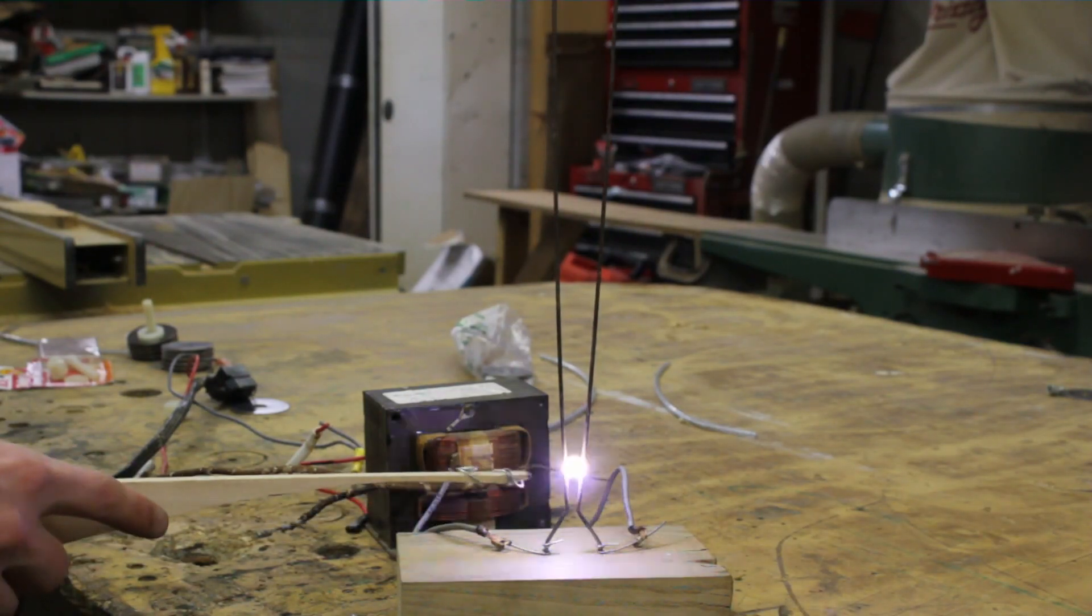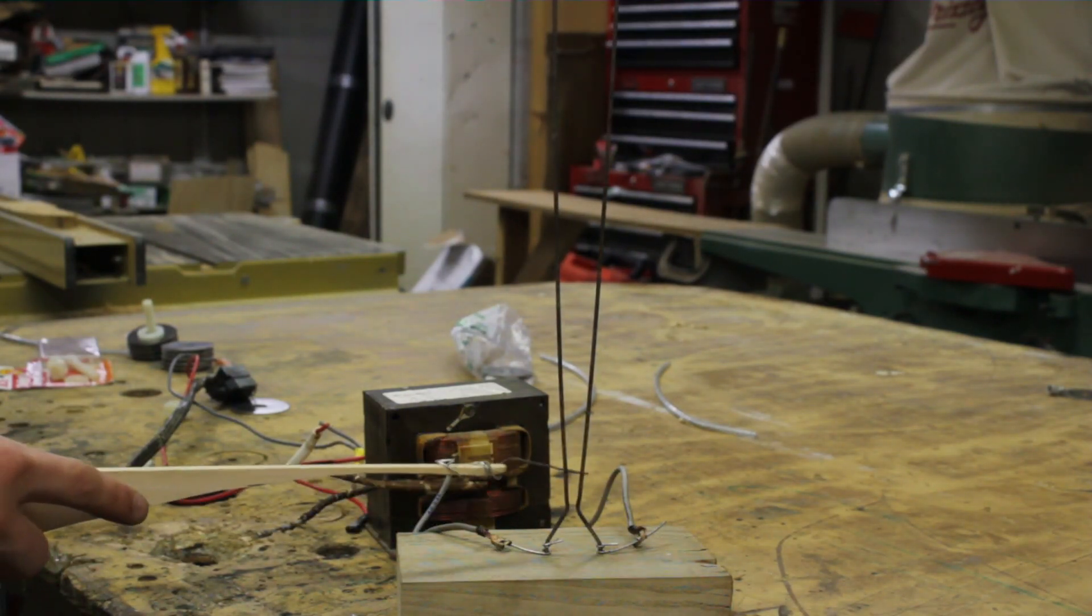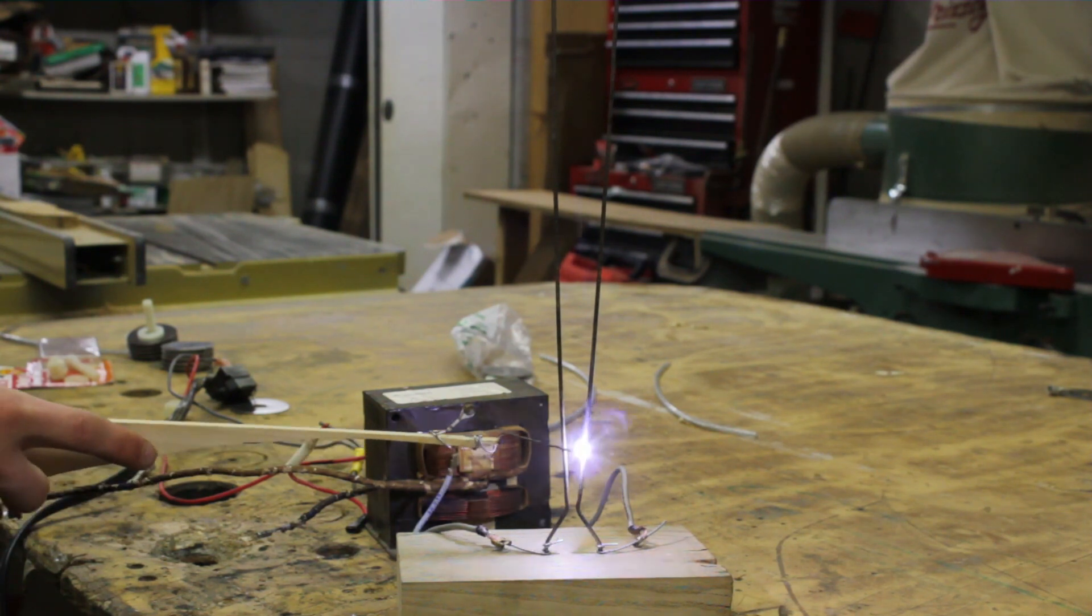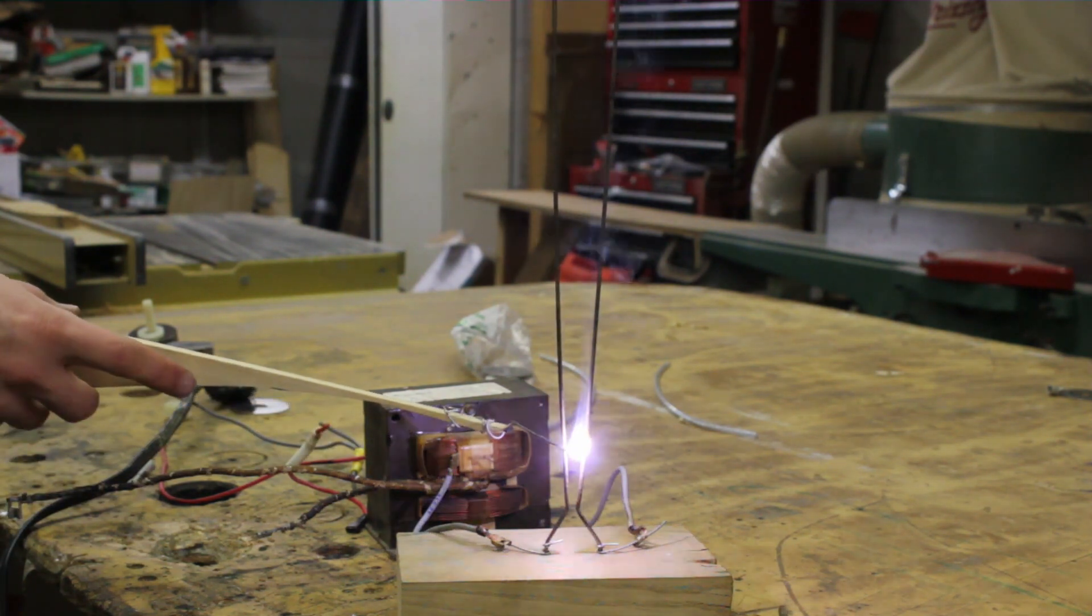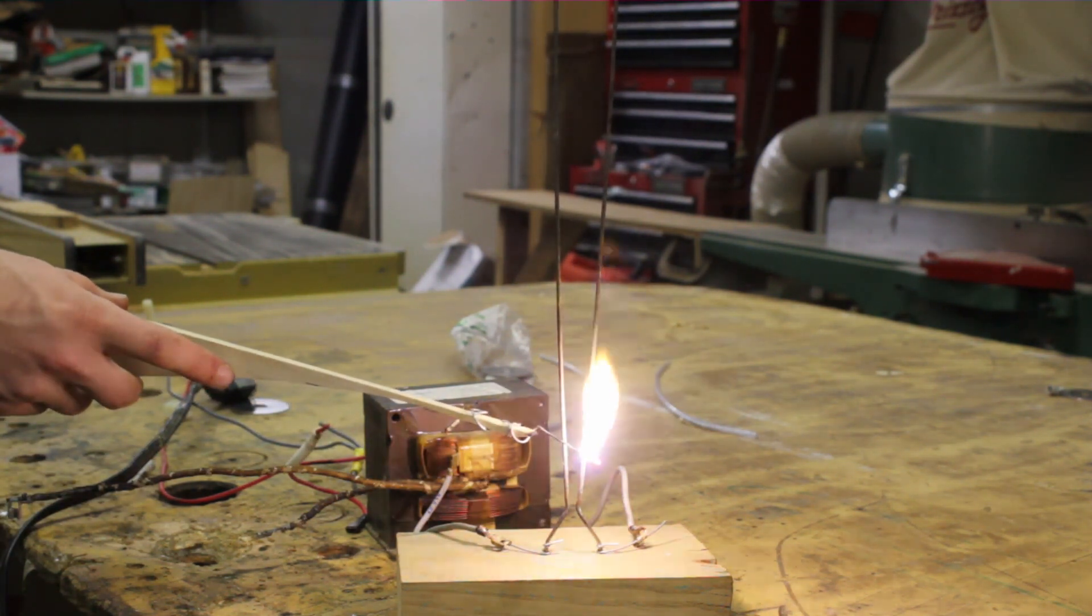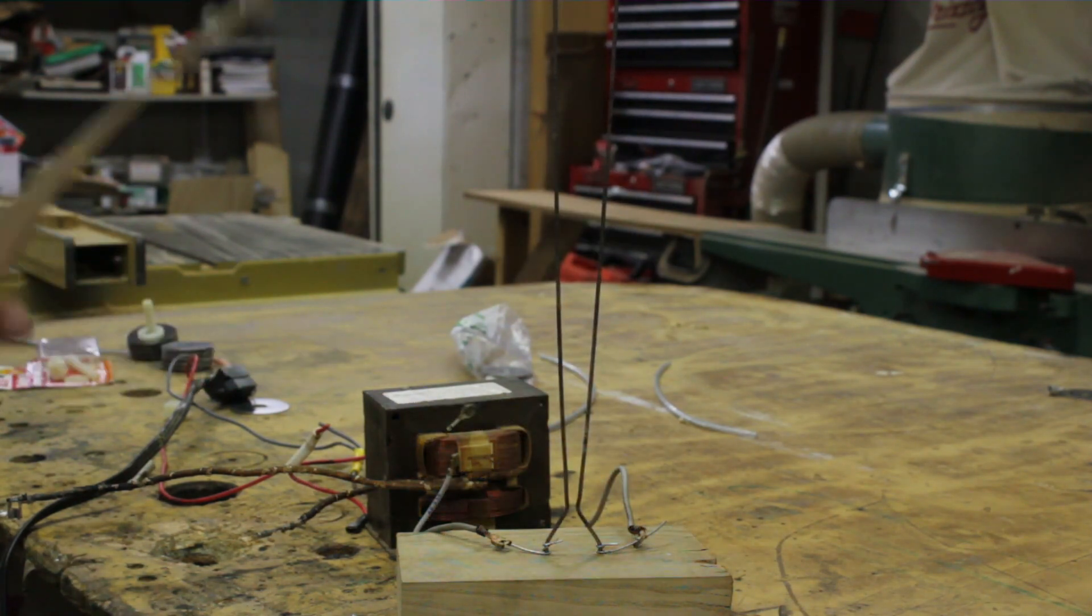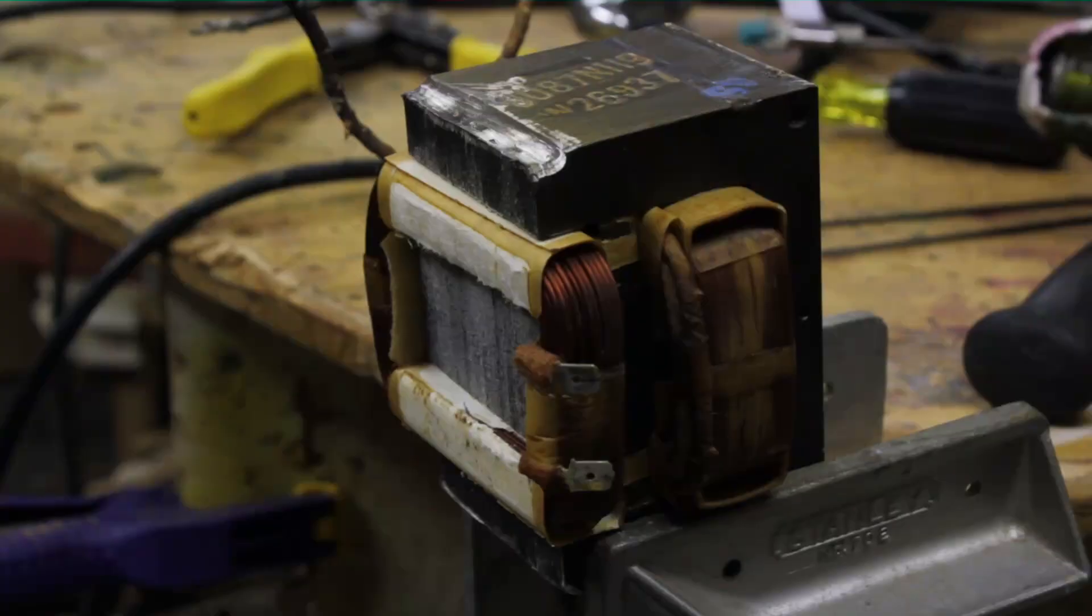Alright, so a while ago I decided to make a Jacob's Ladder thing out of an old microwave oven transformer and it worked pretty good. The sparks were cool and if I hold it like this, it would make a really big electrical fire thing. But it looked pretty cool and that's because I was getting a lot of voltage out of it.